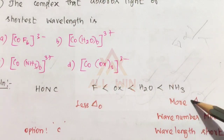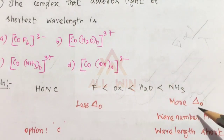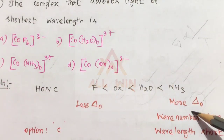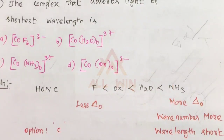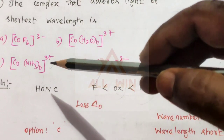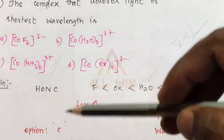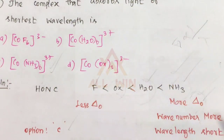More delta means more wave number, and more wave number corresponds to shorter wavelength. So the complex with the strongest field ligands absorbs the shortest wavelength. The answer is Option C. Option C is the correct answer.